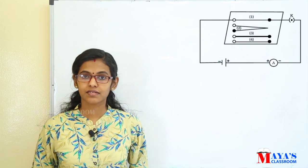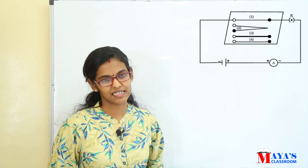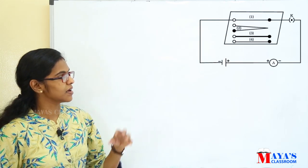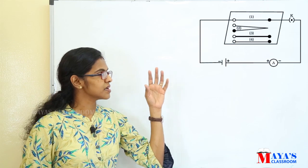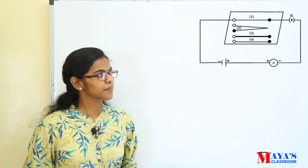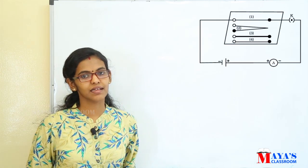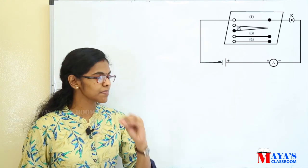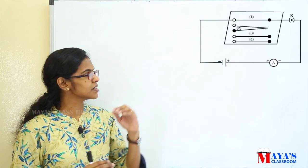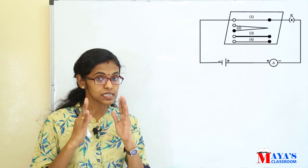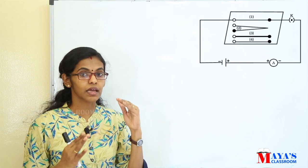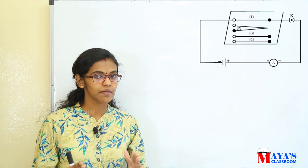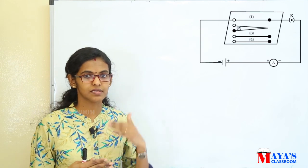Next, we check the factors that affect the resistance of a conductor. We consider a circuit diagram consisting of a cell, a key, and an ammeter. Different components are connected. First: a nichrome wire of particular length and thickness. Second: the same nichrome wire of same thickness but with doubled length. Third: the same nichrome wire of same length but with greater area of cross-section. Fourth: same length, same thickness but different material — a copper wire.